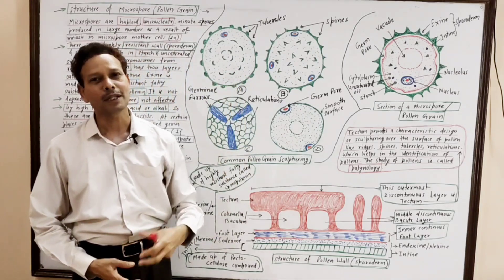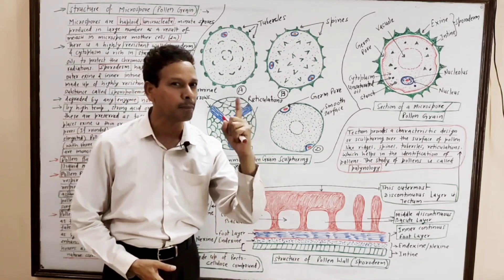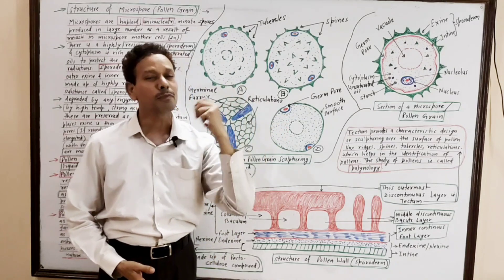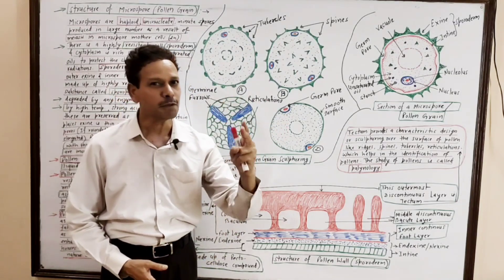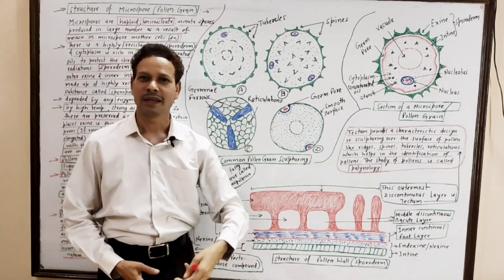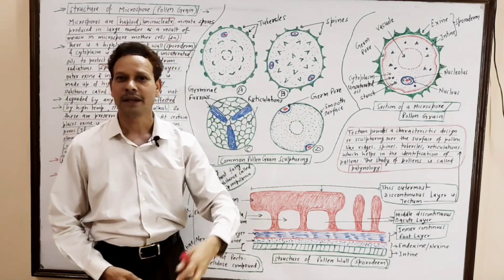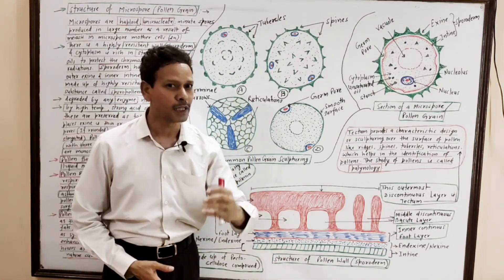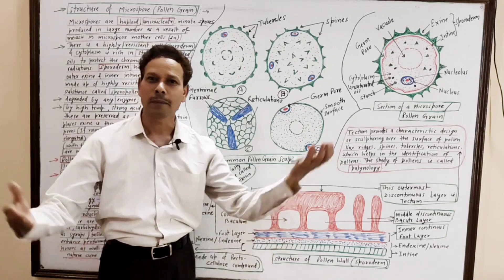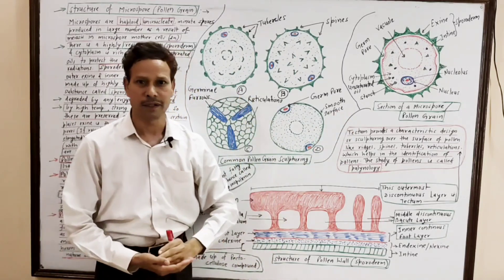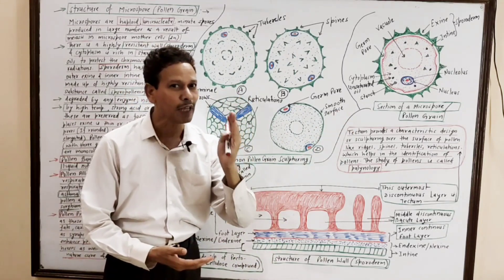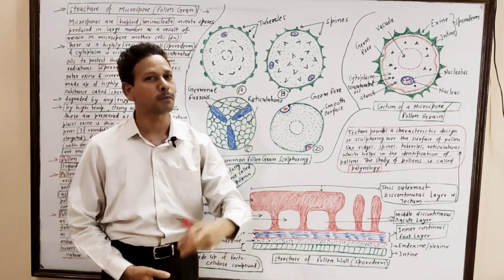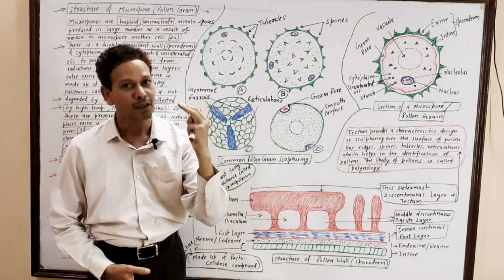These pollen mother cells are diploid cells. Each diploid pollen mother cell undergoes meiosis. Due to meiotic division, each pollen mother cell produces a group of four haploid pollens named a tetrad, in which four microspores remain connected by callose layers. These callose layers are dissolved by an enzyme called callase, which is produced by the tapetum.